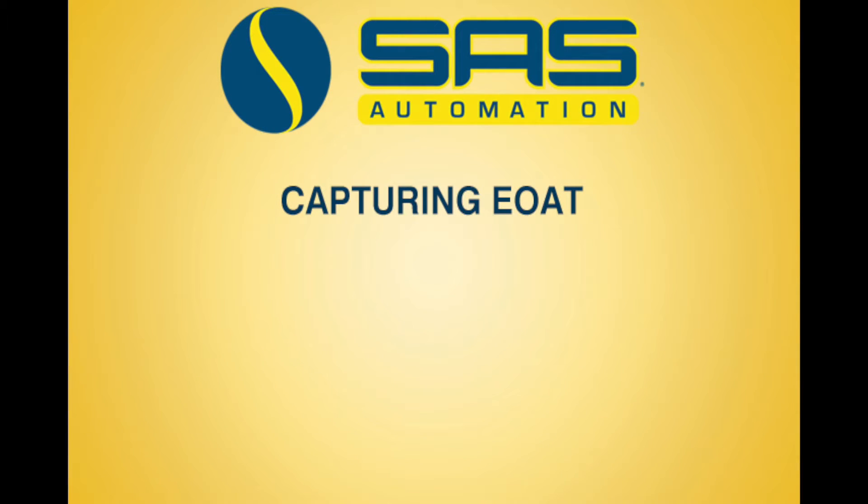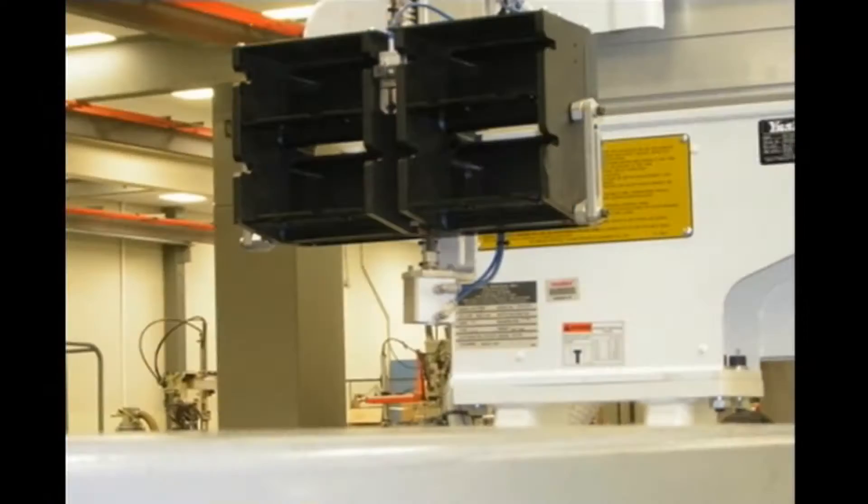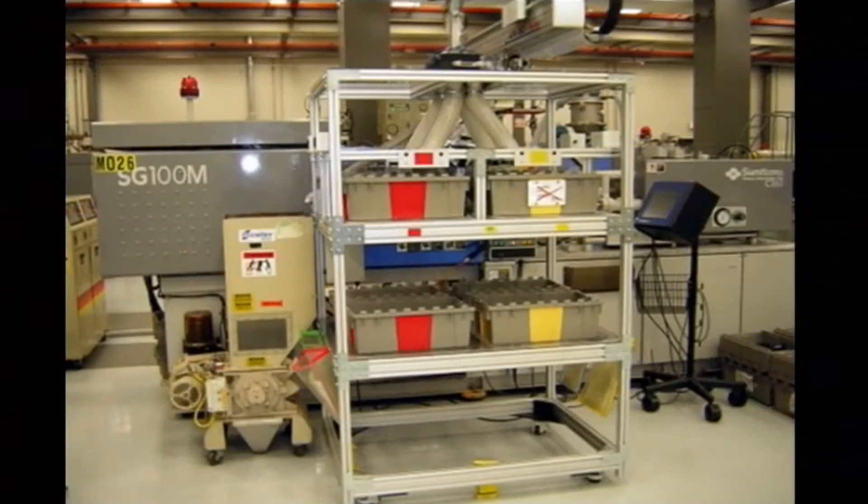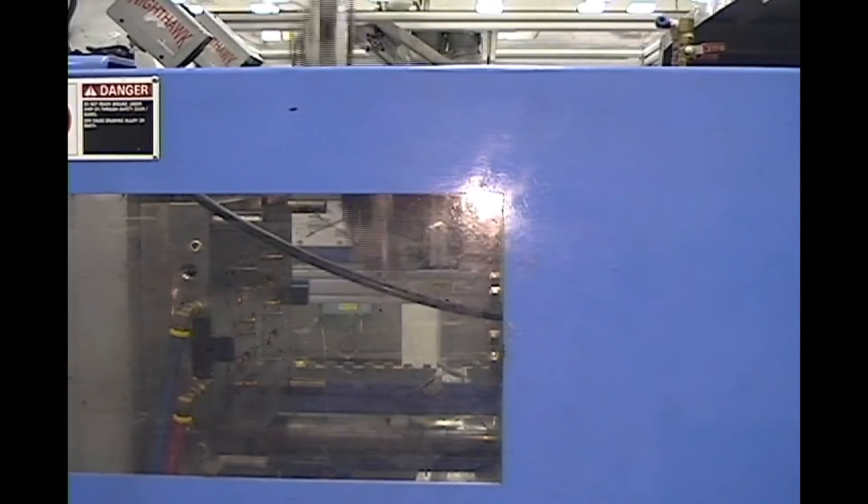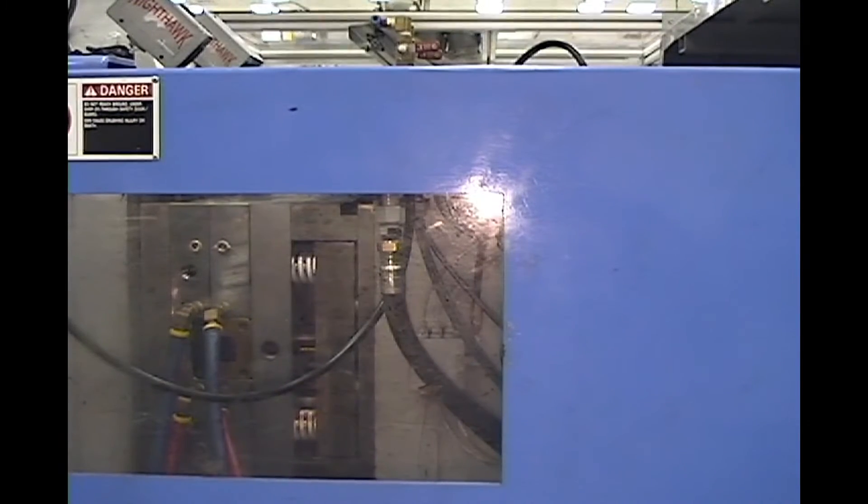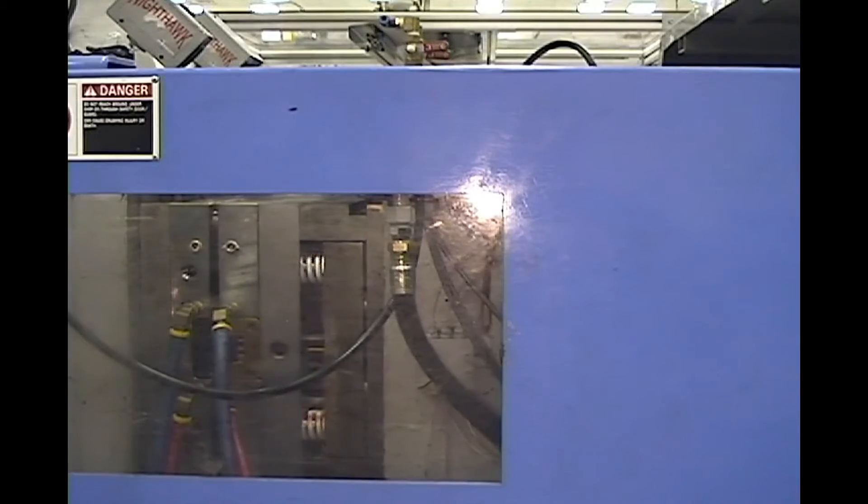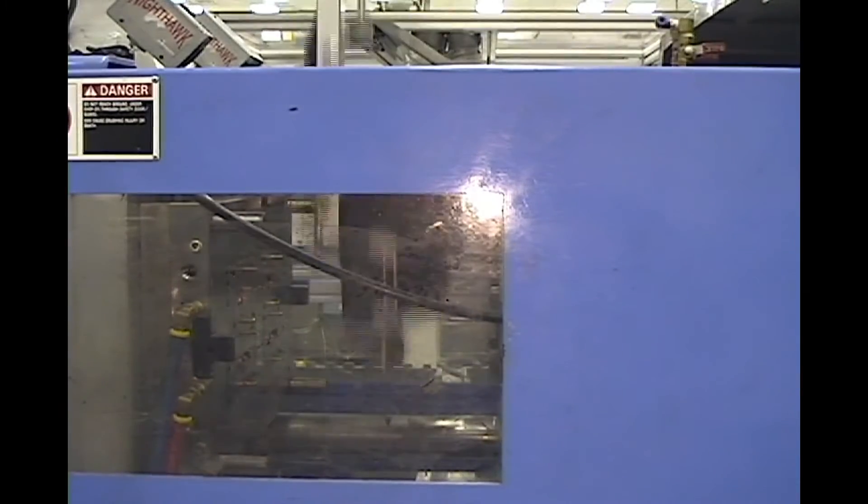This presentation introduces our capturing end-of-arm tool and distribution tower. In this injection molding situation, some parts cannot be picked with a gripper as they are too delicate and cannot be secured with a vacuum cup since they are too porous.